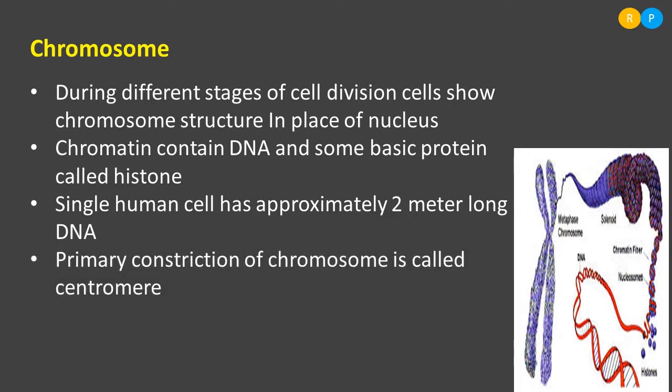So this 2-meter-long DNA thread is highly coiled and distributed among 46 chromosomes in the human cell. Just imagine — the cell is very small, it is a microscopic structure. It is amazing how this long DNA is highly coiled and forms such a compact structure inside the cell. The primary constriction of the chromosome is called the centromere. At the center of the chromosome we can find the primary constriction, named as centromere.